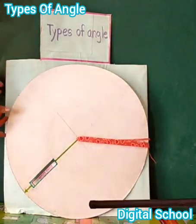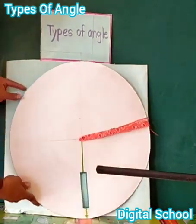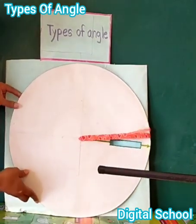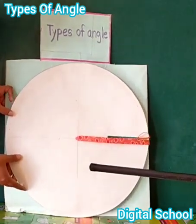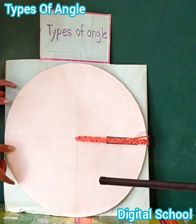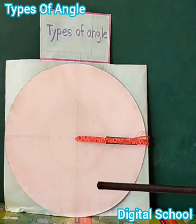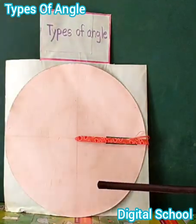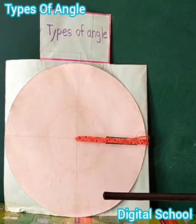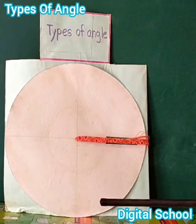Assalamu alaikum, I am Asuna. Today we will learn about types of angle. Dear friends, look at the board. This is a complete angle. The definition of complete angle: an angle that measures 360 degrees is called a complete angle. In the figure, it shows the complete angle. Thank you.